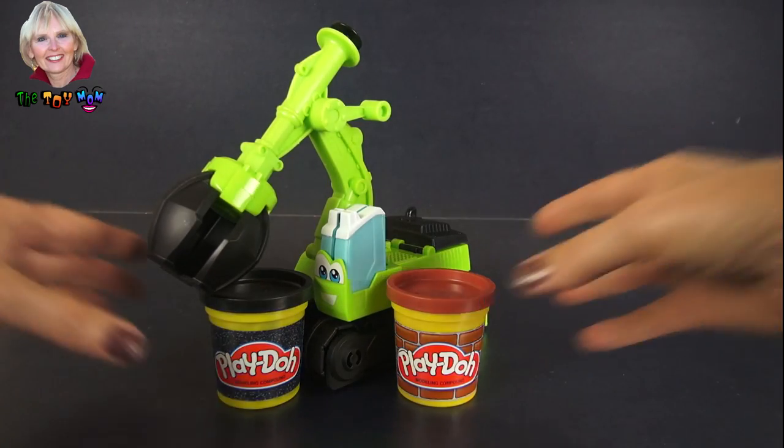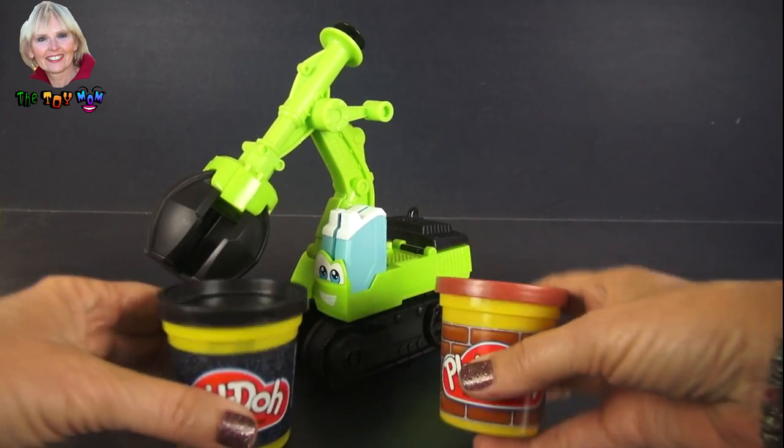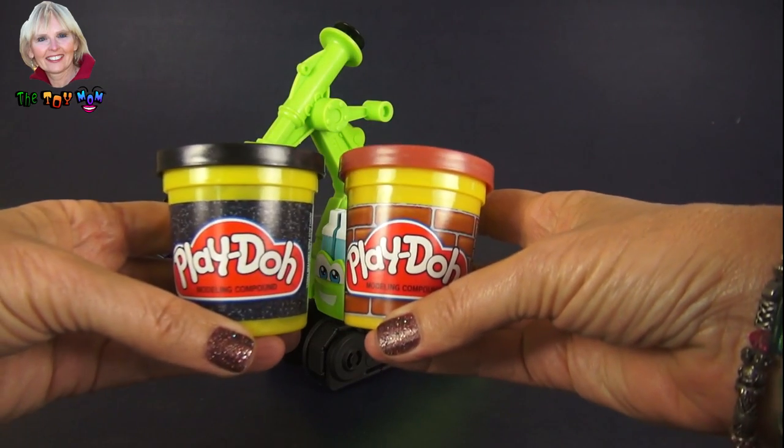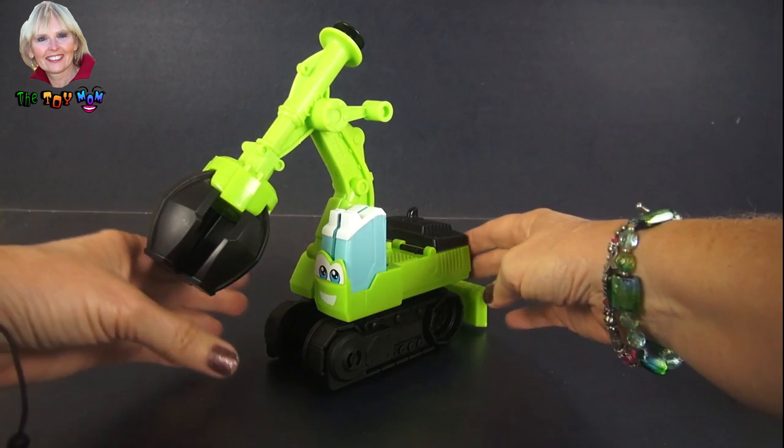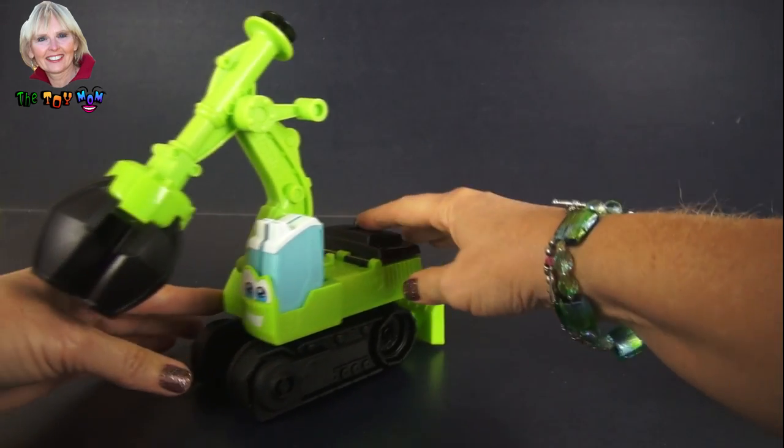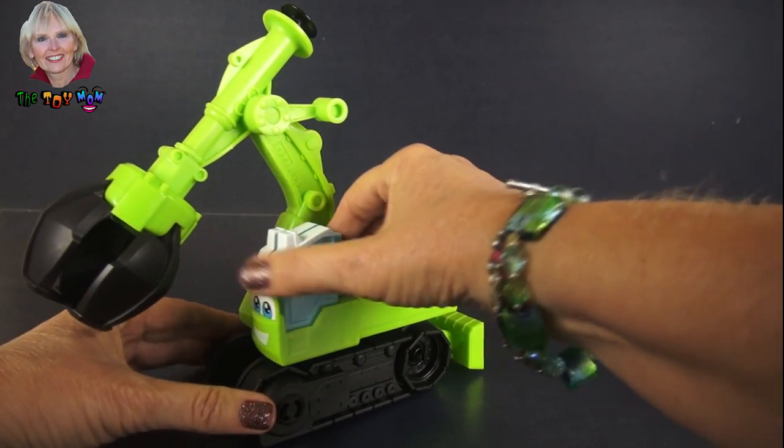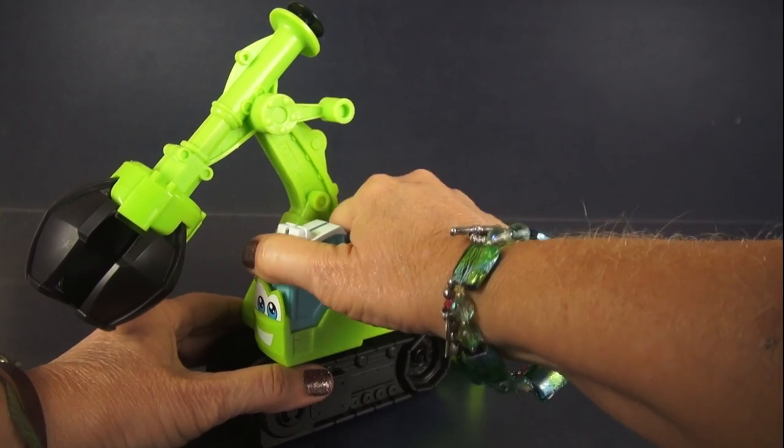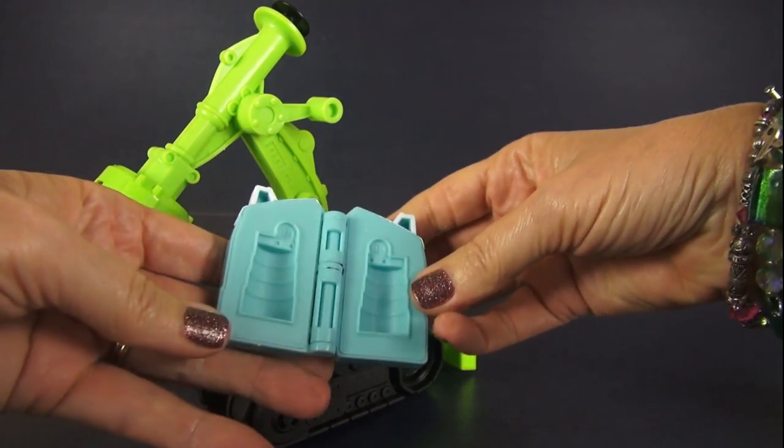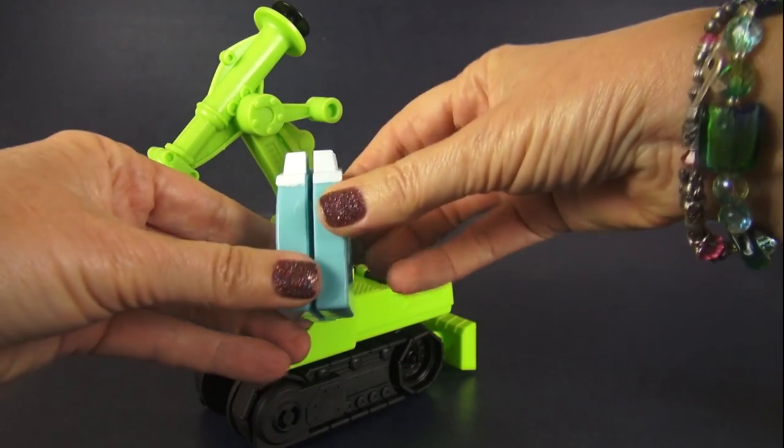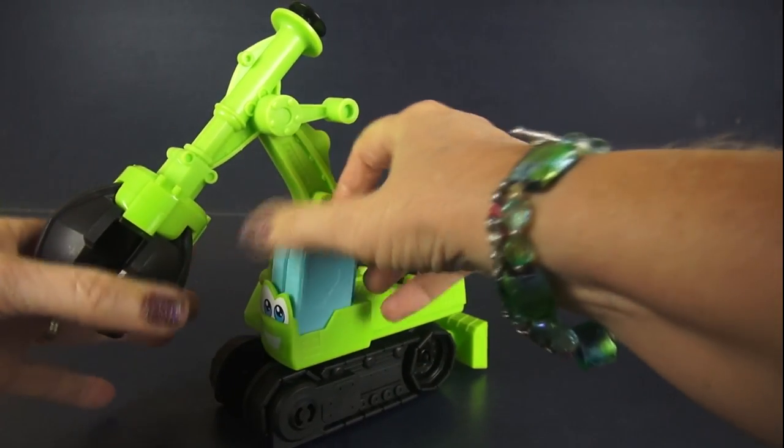Chomper comes with two different Play-Doh colors for us. And then let me show you all the features that Chomper has, because it's pretty neat. He has three ways that you can mold things. This comes out, and we'll use that later, and it makes barriers around our construction zone.